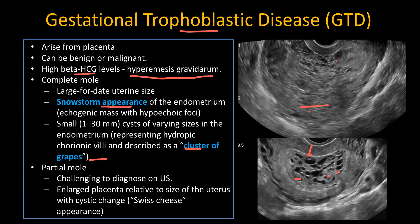A complete mole will show no fetal parts. Partial moles are difficult to diagnose on ultrasound. You may see an enlarged placenta relative to the uterus with cystic changes — known as a Swiss cheese appearance. It's very challenging, but if you see a gestational sac with adjacent cystic changes in the endometrium, you can consider this diagnosis.